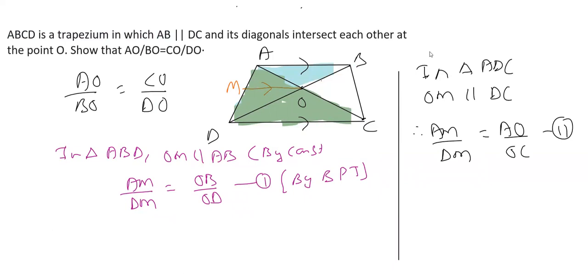Now from equation 1 and 2, as you can see here, AM upon DM is same in equation 1 and 2. So we will write from 1 and 2, we can say that OB upon OD is equal to AO upon OC.